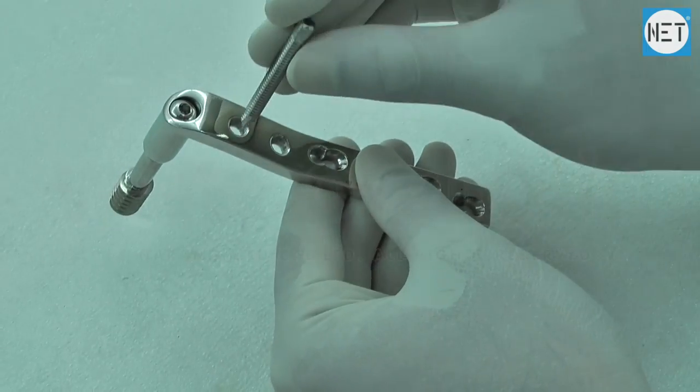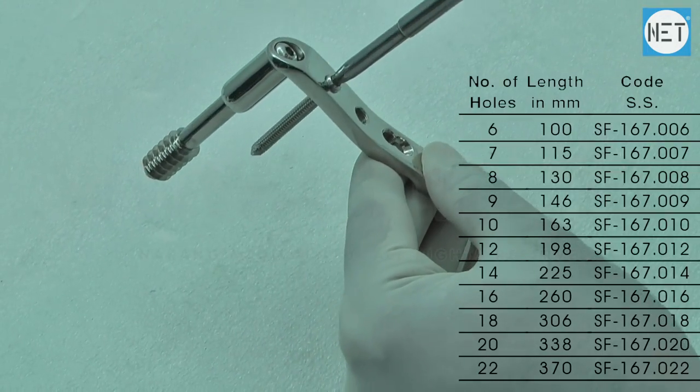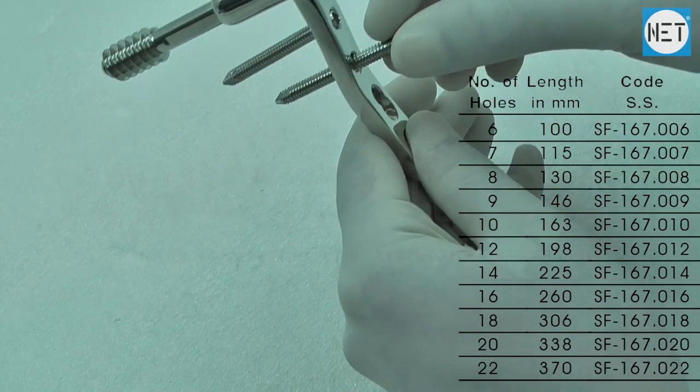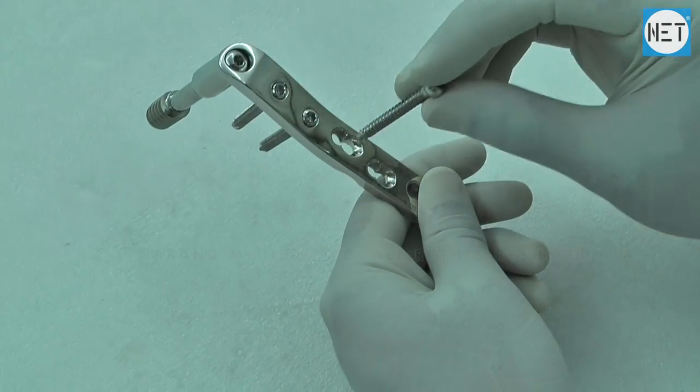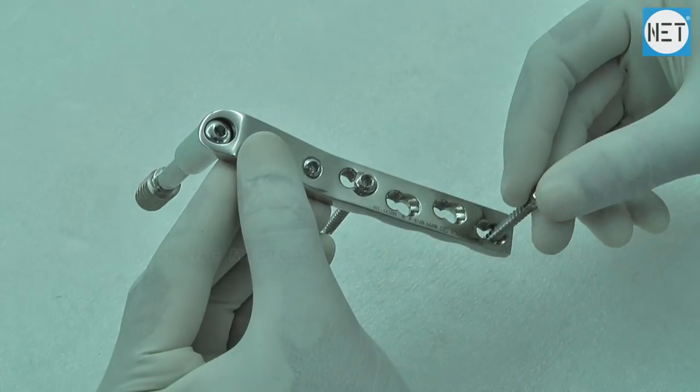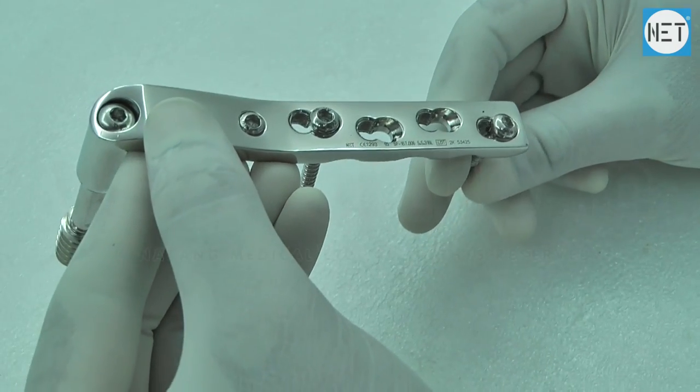These plates are available with number of holes varying from 6 to 22 and in lengths varying from 100 to 370mm. 95 degree DCS Safety Lock Plates are available in stainless steel and titanium.